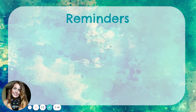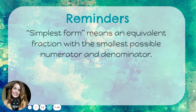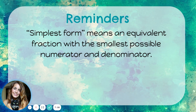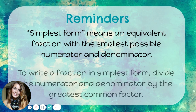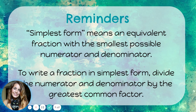Here are some reminders. Simplest form means an equivalent fraction with the smallest possible numerator and denominator. To write a fraction in simplest form, divide the numerator and the denominator by the greatest common factor.